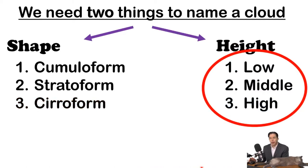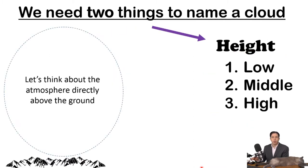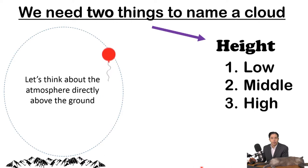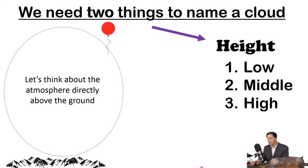Now for the three possible heights. To understand the meaning of low, middle, and high, we're going to think about what the air above the ground is like. Imagine you're in a balloon rising up from the surface into the atmosphere, taking the temperature and recording it. What you would notice right away is that as you got up into the sky, it gets colder.